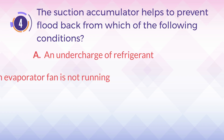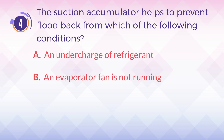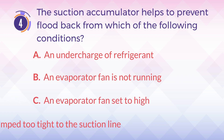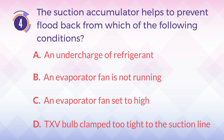Number four: the suction accumulator helps to prevent flood back from which of the following conditions? A) an undercharge of refrigerant, B) an evaporator fan is not running, C) an evaporator fan set to high, D) TXV bulb clamp too tight to the suction line.